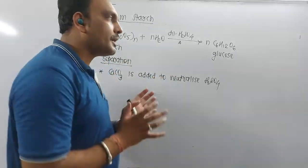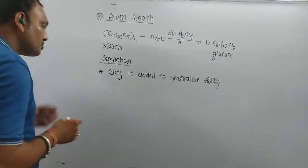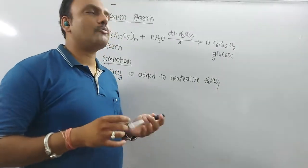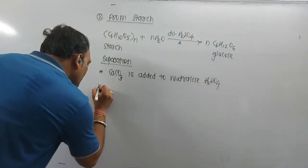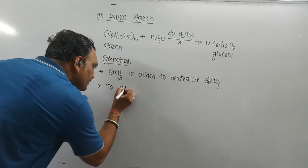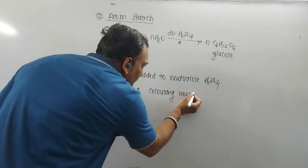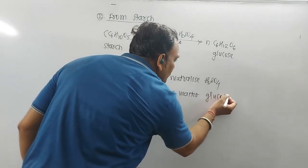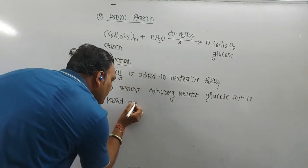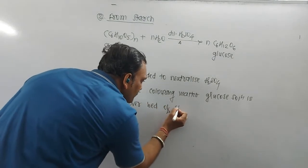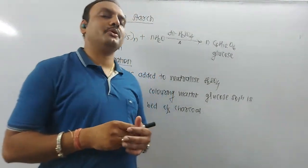Sometimes what happens, syrup of glucose so obtained may be colored. Now we need to remove the coloring matter. So in order to remove the coloring matter, we need to pass that glucose syrup through the bed of charcoal. So to remove colored impurities or coloring matter, glucose solution is passed over bed of charcoal. So by doing this, one can decolorize the glucose solution.